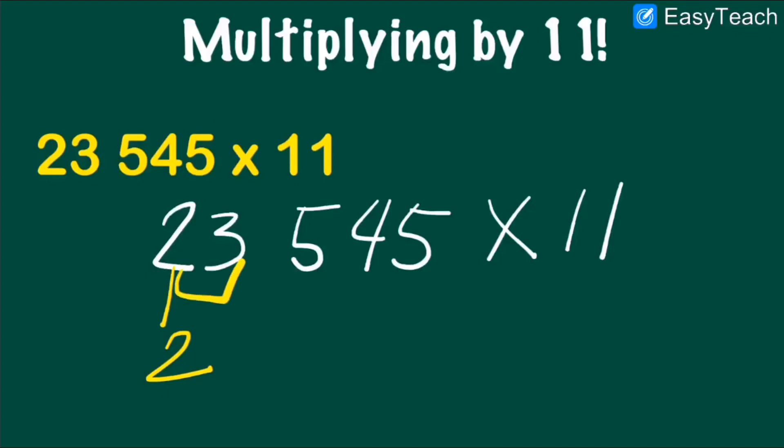2 plus 3 is equal to 5. 3 plus 5 is 8. 5 plus 4 is 9. 4 plus 5 is 9.